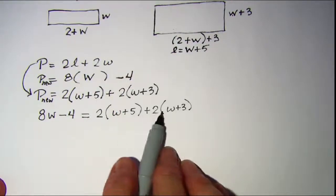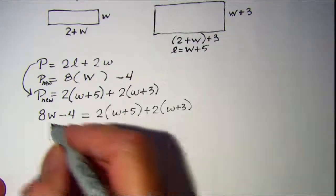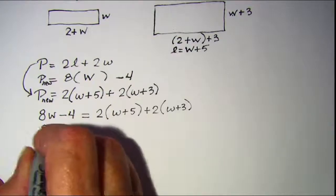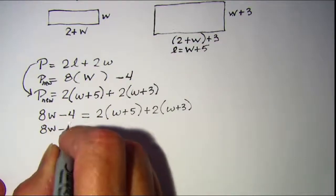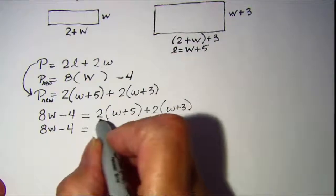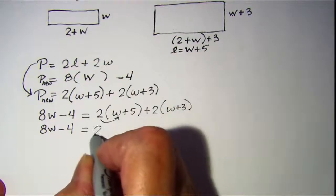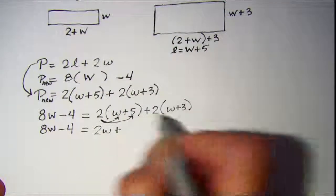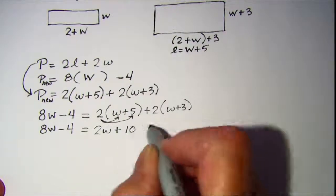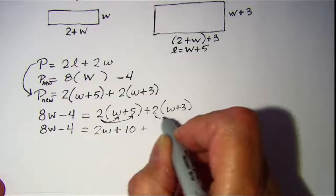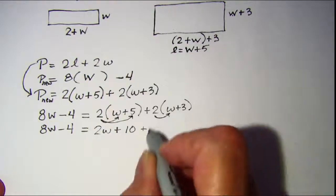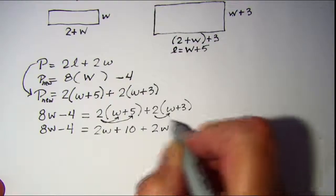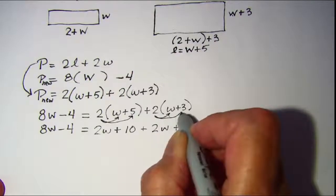Let's distribute and remove these parentheses. I'll just copy the left side: 8w - 4 equals—if I distribute here, I have 2w plus, and then two times five is ten, and then distribute here, I have 2w plus, and then two times three is six.